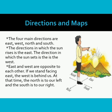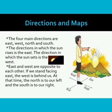How do we find them? The direction in which the sun rises is the east. The direction in which the sun sets is the west. East and west are opposite to each other. If we stand facing east, the west is behind us. At that time, the north is to our left and the south is to our right.